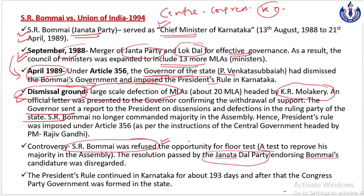Yahan tak ki Janta Dal ne apna ek proper resolution pass kiya tha endorsing Bumai's candidature, yet Governor ne is resolution ko disregard kar diya. Karnataka was placed under President's Rule for next 193 days. Many political experts believe ki agar SR Bumai ko floor test karne ki ijazat di gayi hoti, then it was quite likely that SR Bumai would have been reinstated to the position of CM. Toh is incident se ek cheez saaf nazar aa rahi hai ki Governor ne large-scale defection of MLAs ko as an excuse use kiya tha to impose President's Rule in the state.